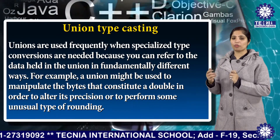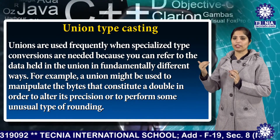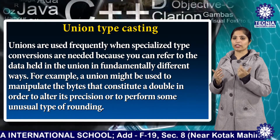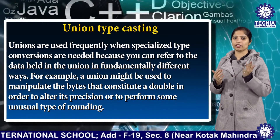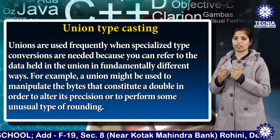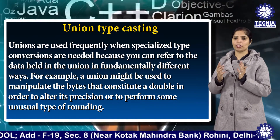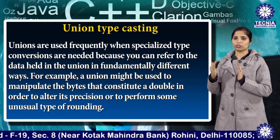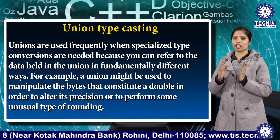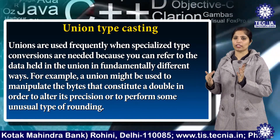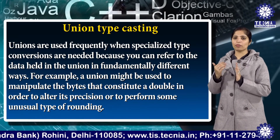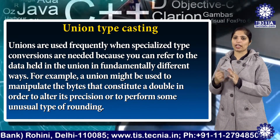Unions are used frequently when specialized type conversions are needed, because you can refer to the data held in the union in fundamentally different ways. For example, a union might be used to manipulate the bytes that constitute a double in order to alter its precision or to perform some unusual type of rounding.